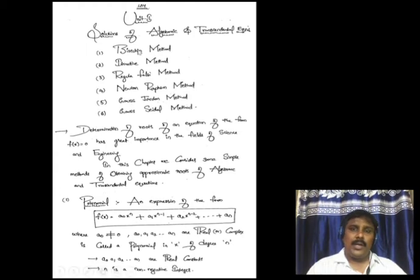This unit consists of six methods: one is the bisection method, second is the iteration method, third is the Regula Falsi method, fourth is the Newton-Raphson method, fifth is the Gauss-Jordan method, and sixth is the Gauss-Seidel method.